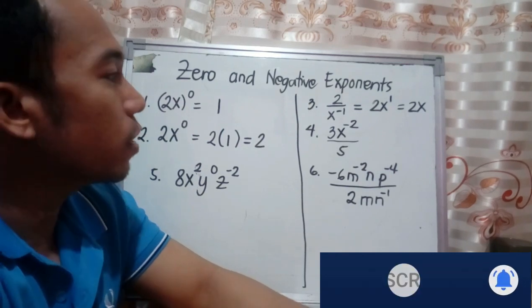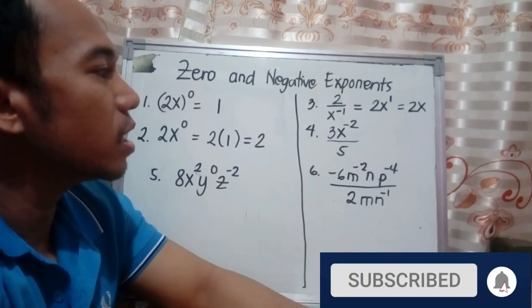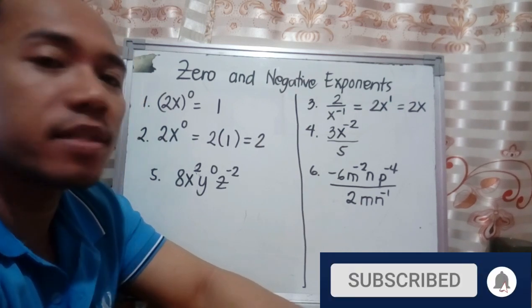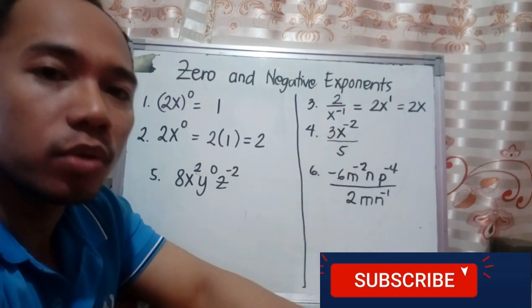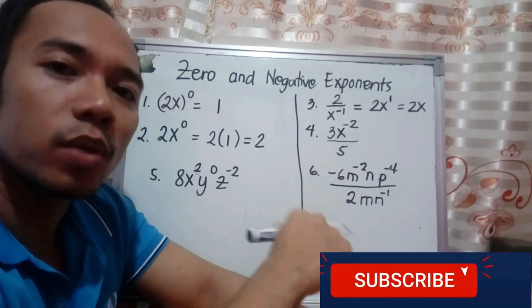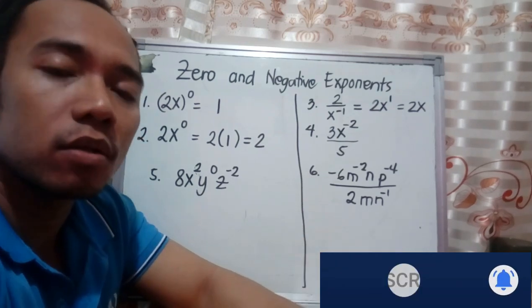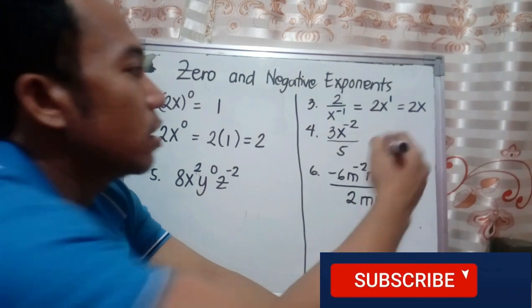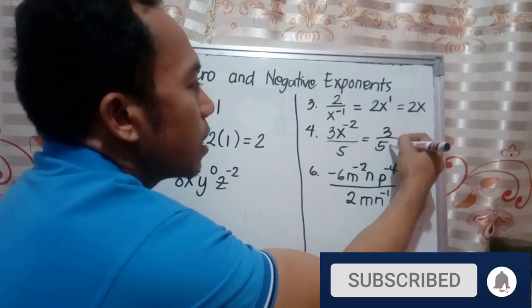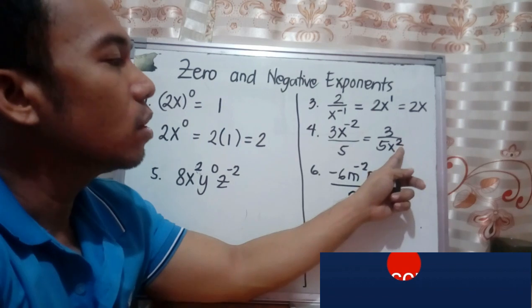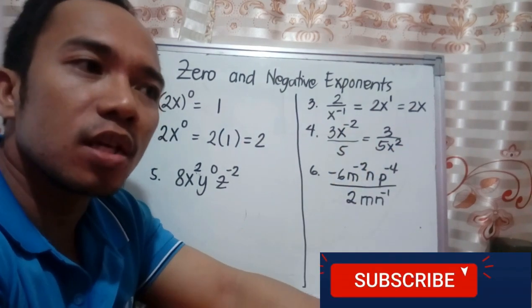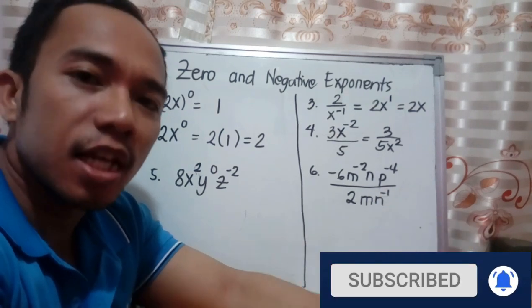For example number 4, you have 3x raised to negative 2 over 5. The negative 2 exponent applies only to x — the 3 is not included. So x will be moved to the denominator and the 3 over 5 will stay. Only x raised to negative 2 changes its position. This becomes 3 over 5x squared. The exponent negative 2 becomes positive 2 when it moves from numerator to denominator.